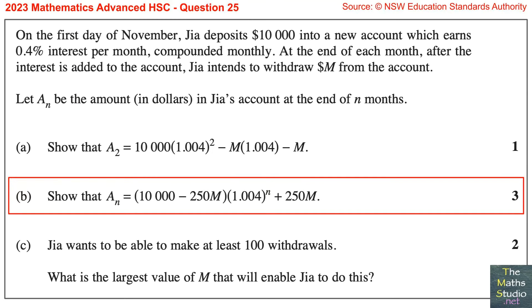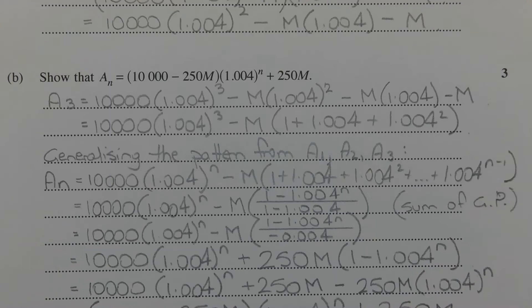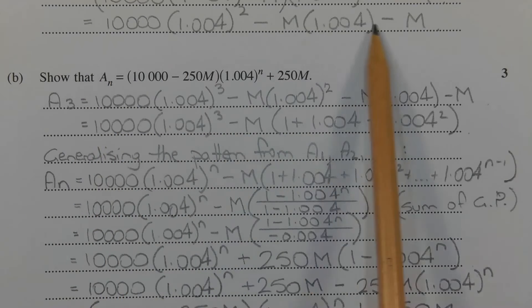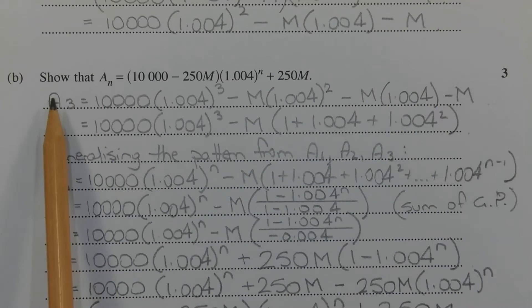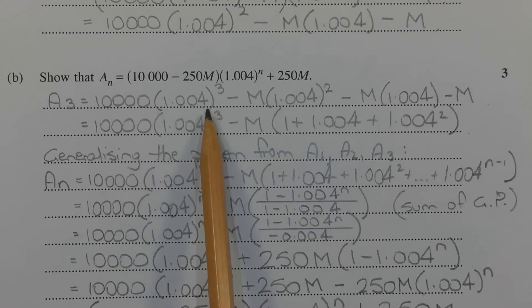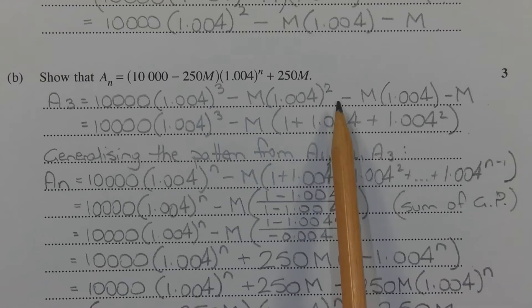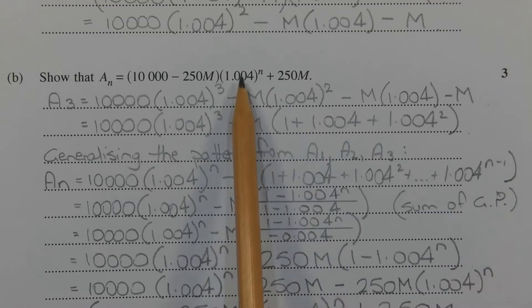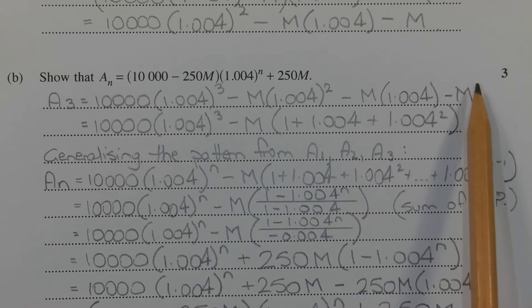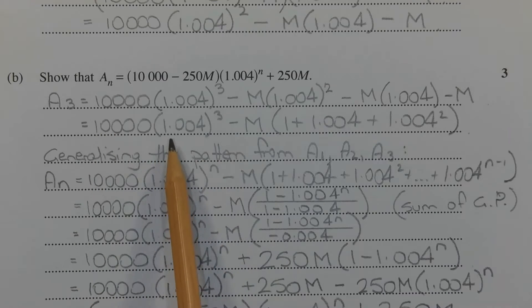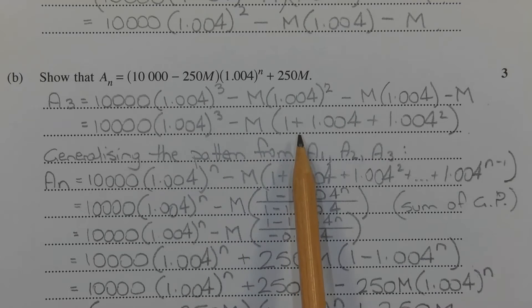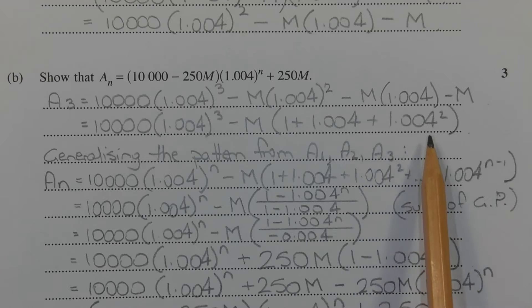Part B. Show that A_N equals (10,000 minus 250M) times 1.004 to the power of N, plus 250M. Continuing on the pattern from Part A, let's come up with an expression for A3 to make the pattern clearer. Following on, A3 will equal 10,000 times 1.004 to the power of 3, minus M times 1.004 squared, minus M times 1.004, minus M. Factorising out minus M, A3 equals 10,000 times 1.004 to the power of 3, minus M times (1 plus 1.004 plus 1.004 squared).